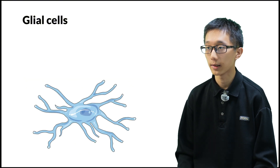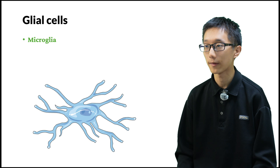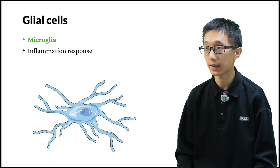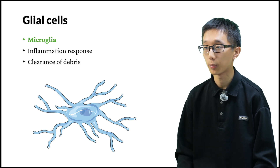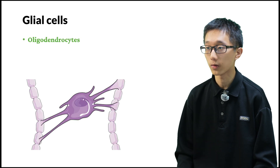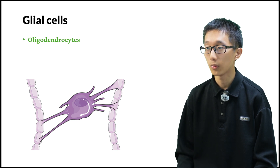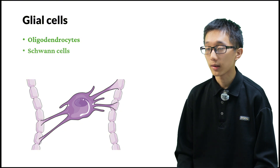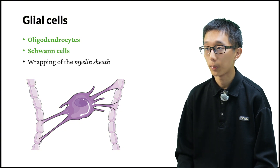This is a microglia. As its name suggests, it is very small and only has a few processes. However, it is still very important — it regulates the inflammation response in the nervous system and clears debris, such as dead cells, inside the nervous system. This figure shows an oligodendrocyte — the green oligodendrocyte extends its many processes to wrap myelin sheaths around multiple axons. We also have Schwann cells. Both oligodendrocytes and Schwann cells are responsible for wrapping the myelin sheaths.